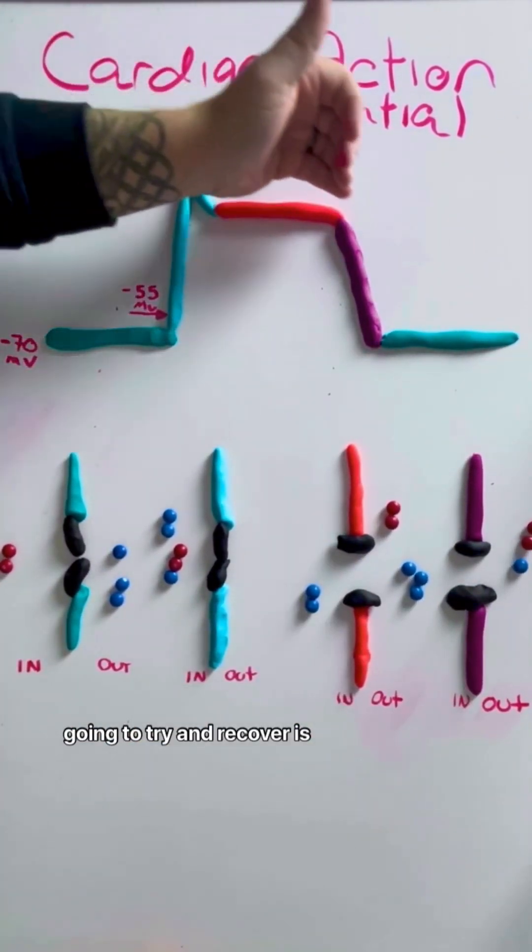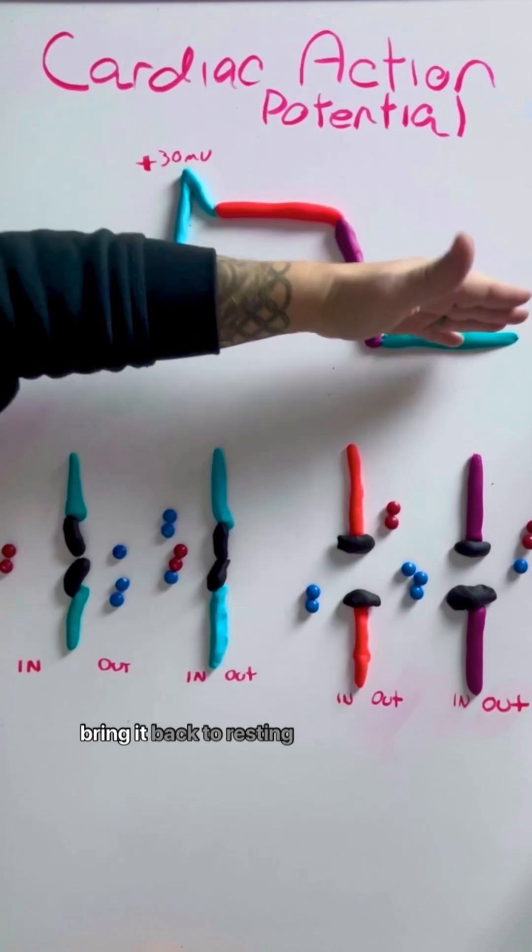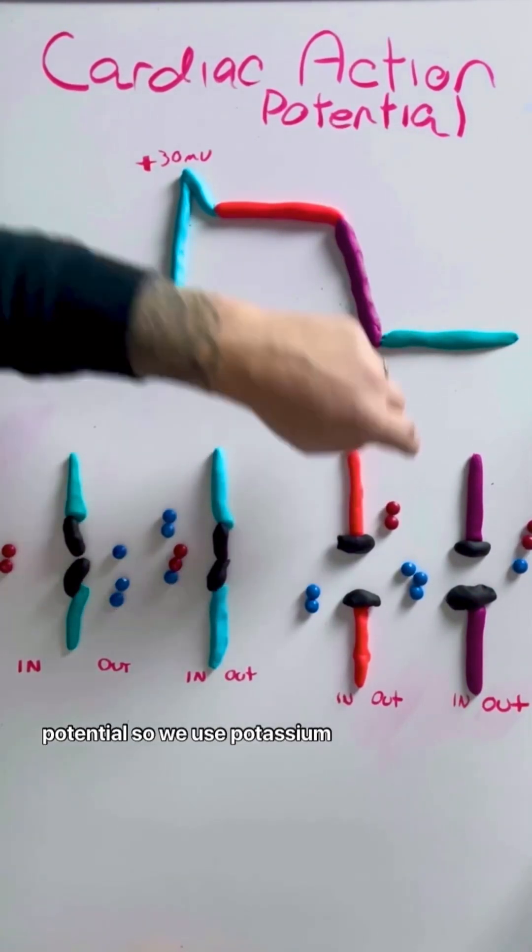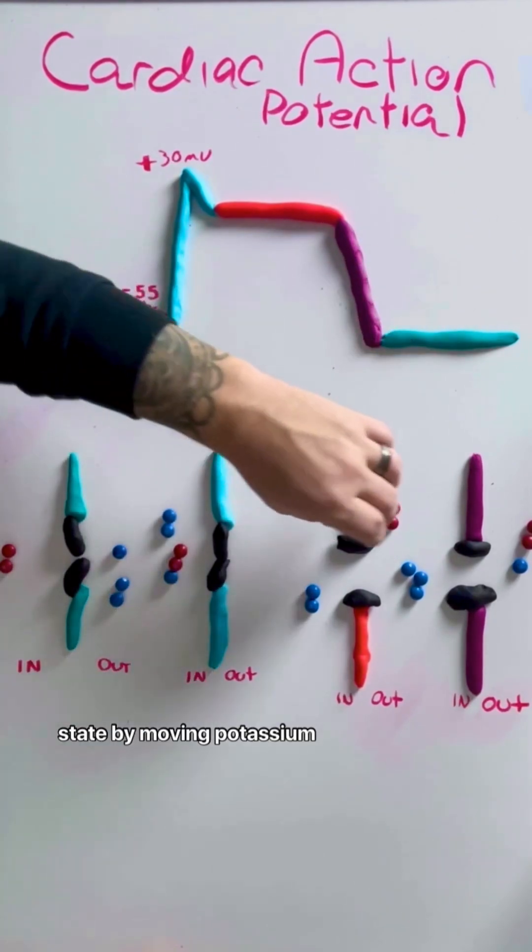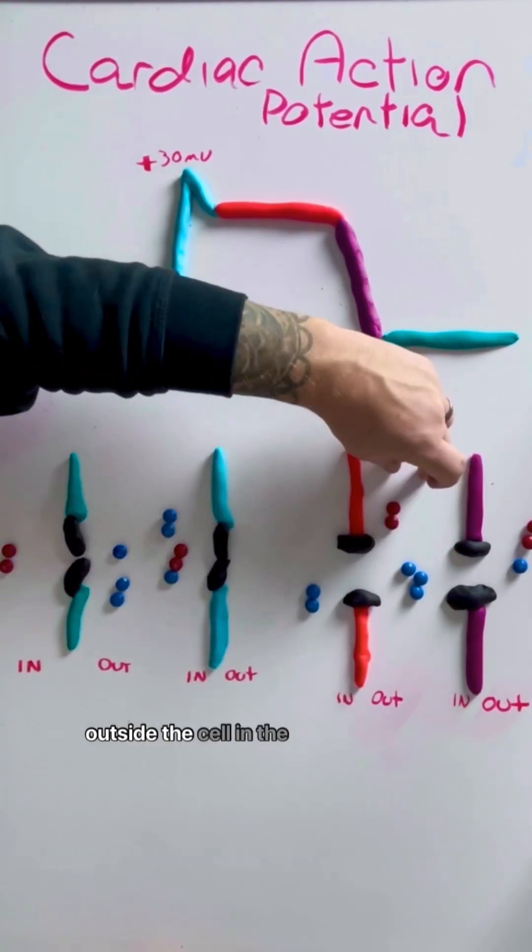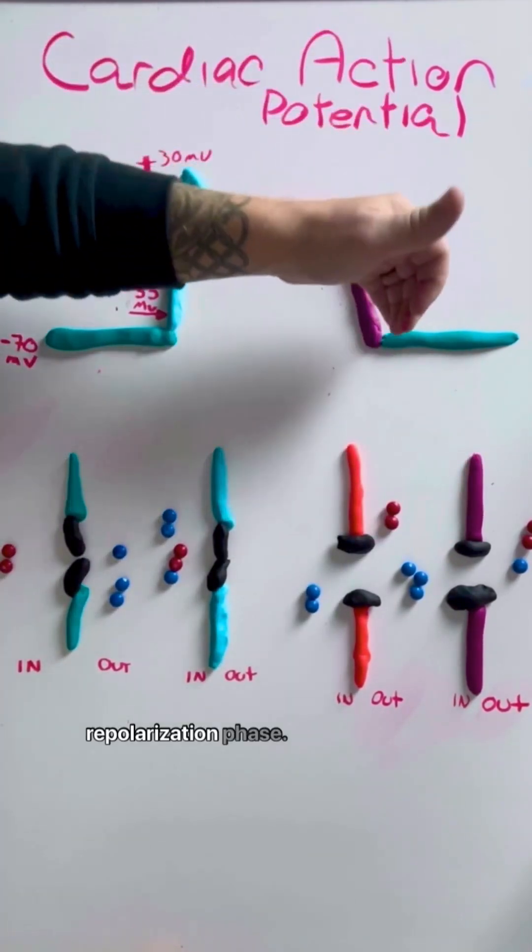And what that's going to do is it's going to try and recover, is trying to reset the cell and bring it back to resting potential. So we use potassium to prepare for that and get them down to this resting state by moving potassium from inside the cell to outside the cell in the repolarization phase.